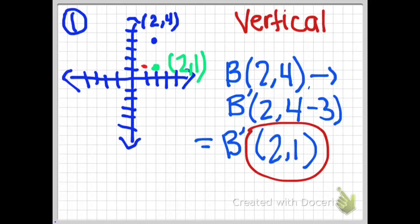Now an example for vertical translation. You have point b at (2, 4) and you subtract 3 from the y coordinate. After you subtract, you get (2, 1). The coordinate b equals (2, 4) changes into b: (2, 4 minus 3), which equals b at (2, 1).